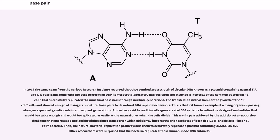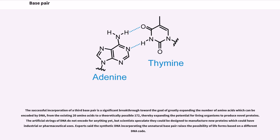Other researchers were surprised that the bacteria replicated these human-made DNA subunits. The successful incorporation of a third base pair is a significant breakthrough toward the goal of greatly expanding the number of amino acids which can be encoded by DNA, from the existing 20 amino acids to a theoretically possible 172, thereby expanding the potential for living organisms to produce novel proteins. The artificial strings of DNA do not encode for anything yet, but scientists speculate they could be designed to manufacture new proteins which could have industrial or pharmaceutical uses. Experts said the synthetic DNA incorporating the unnatural base pair raises the possibility of life forms based on a different genetic code.